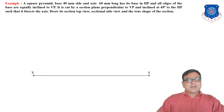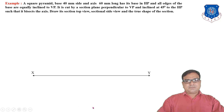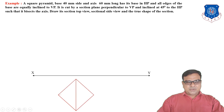The solid is a square pyramid resting on edge beyond its base, with all edges of the base equally inclined to VP at 45 degrees. We have to cut the solid with a cutting plane perpendicular to VP and inclined at 45 degrees to HP. First, draw the XY line and then draw the top view and front view of the square pyramid, where the axis is perpendicular to HP.